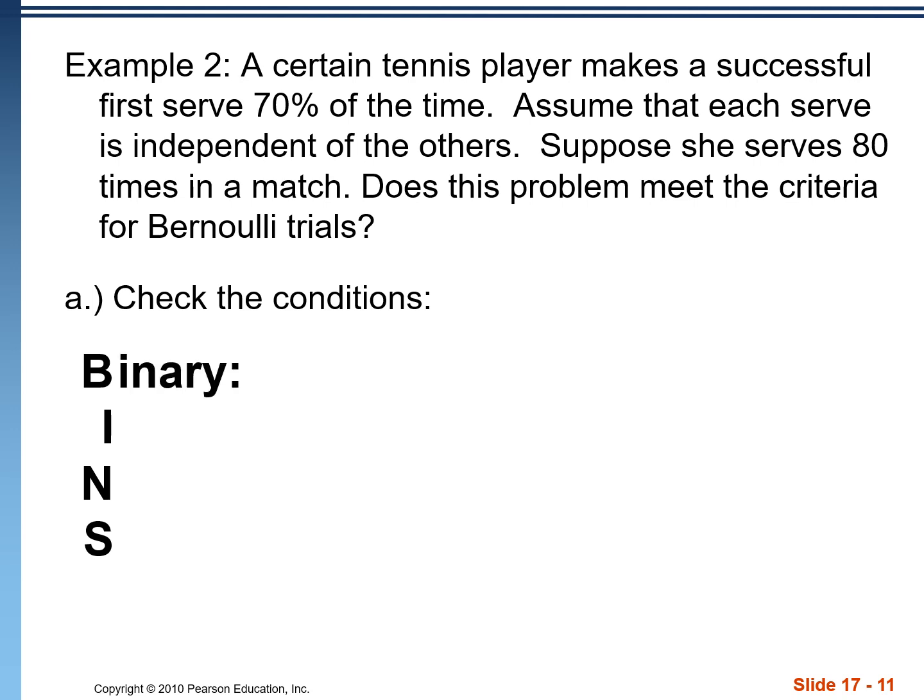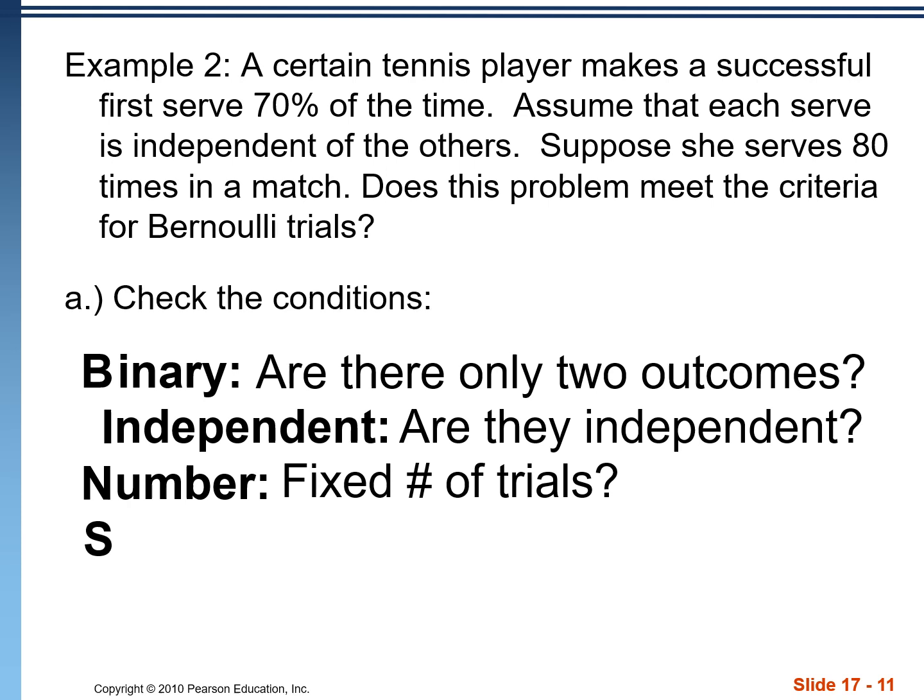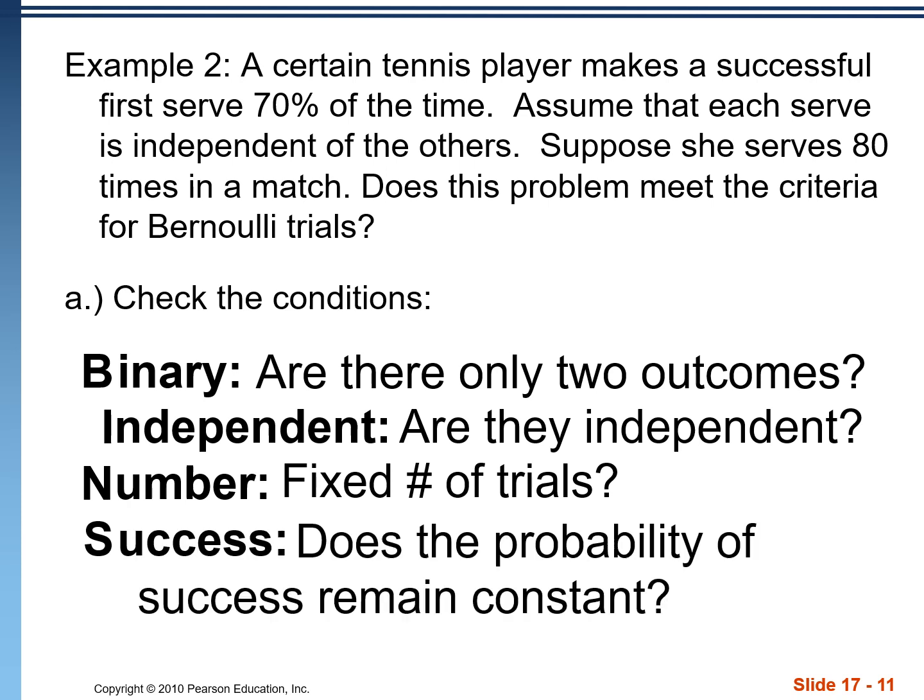So the B in bins means binary. Are there only two outcomes? The I is for independent. Are the trials independent? N for number, we want to have a fixed number of trials. And S for success. Does the probability of success remain constant?